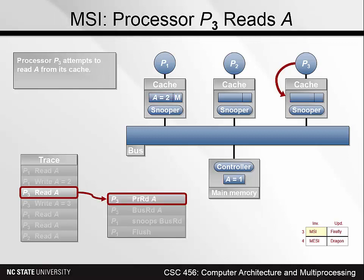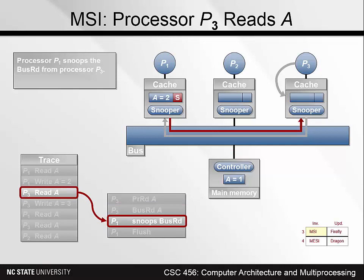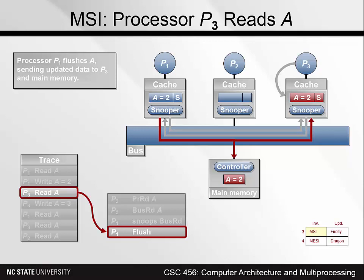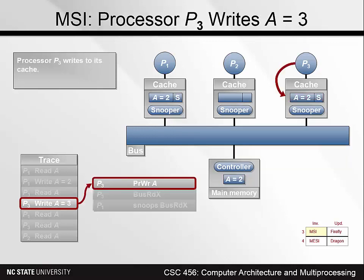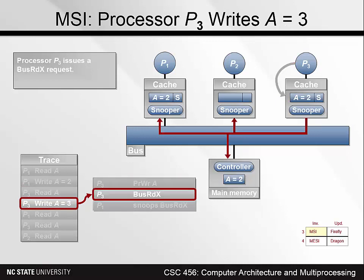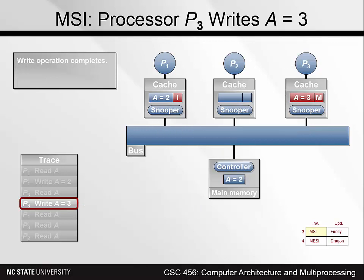Now, P3 reads A. This is a cache miss, so a bus transaction occurs. Before memory responds, P1's snooper notices that another processor is reading, so it needs to downgrade its access and changes to state S. Because P1 has the only up-to-date copy of the block, it flushes it out over the bus where it is picked up by P3 and main memory. Next, P3 writes A. Because its copy of A is in state S, it can't write it without issuing a bus read X. The bus read X is snooped by P1, which invalidates its copy of A. P3's write completes, changing the cached value to 3.